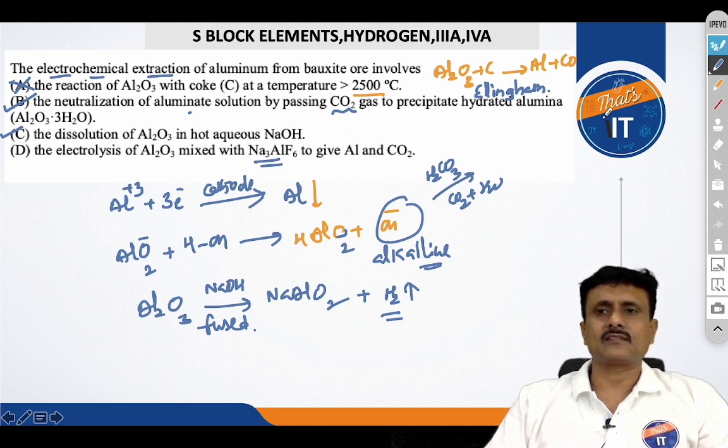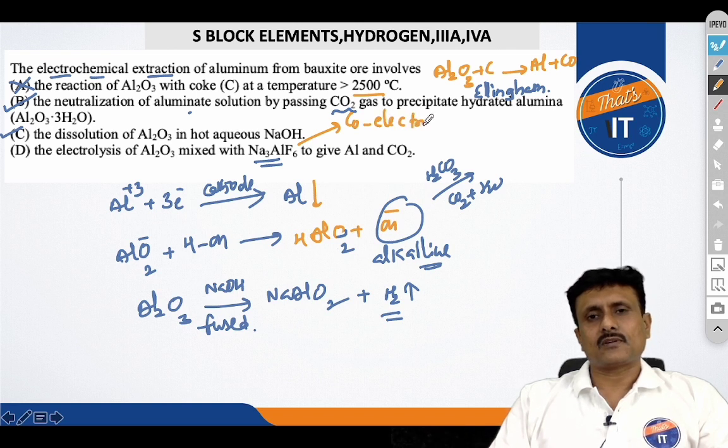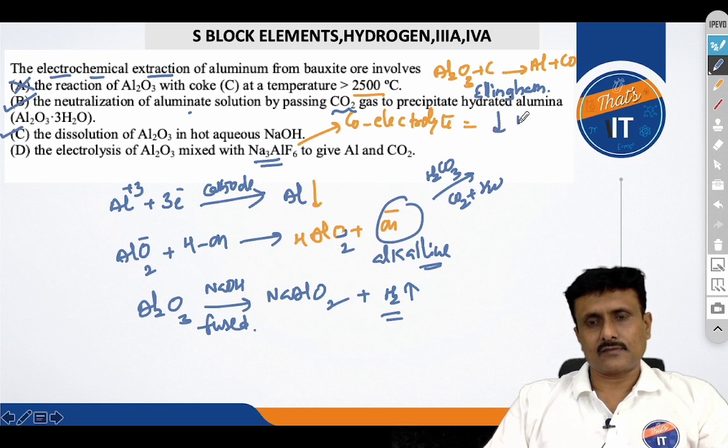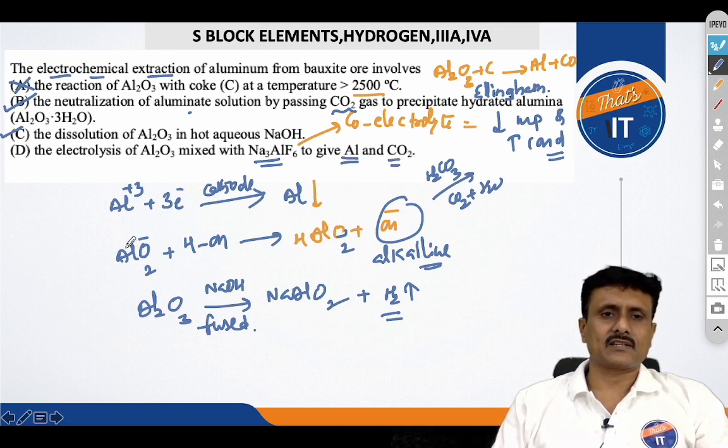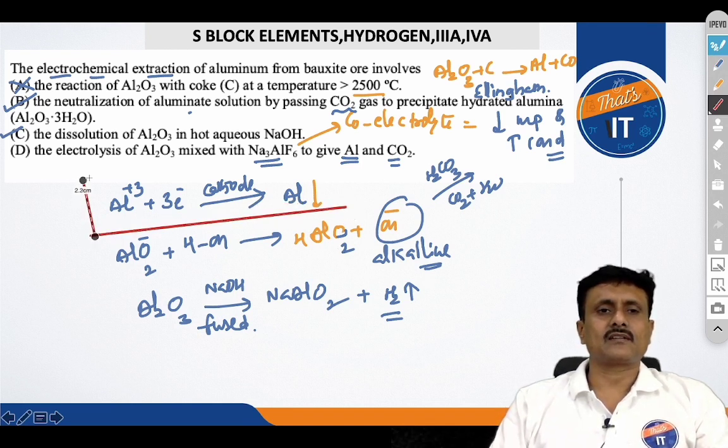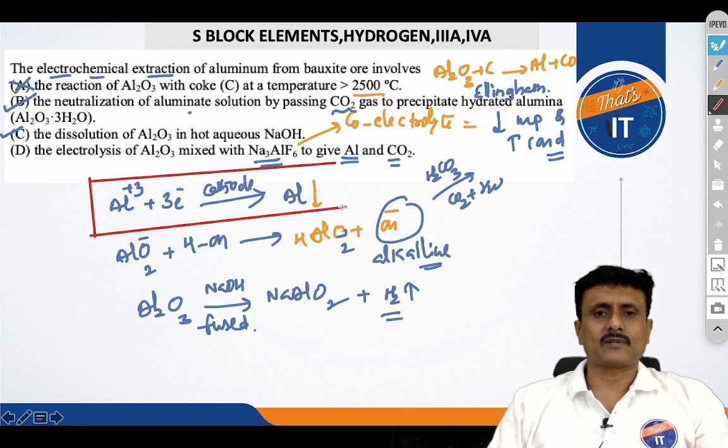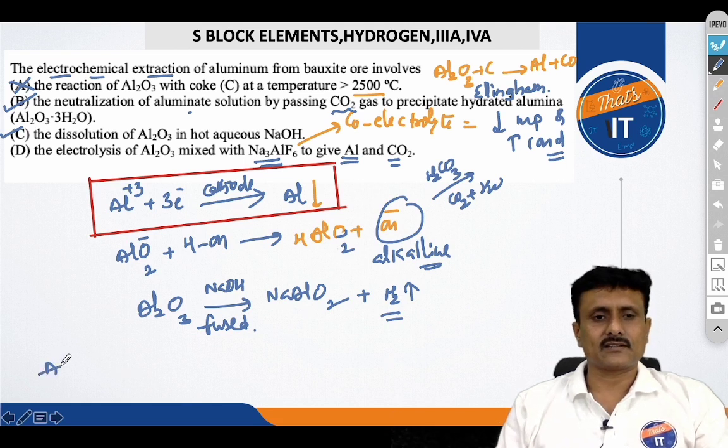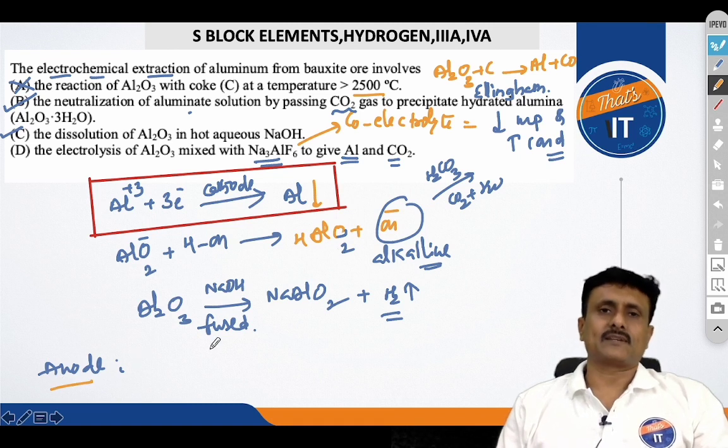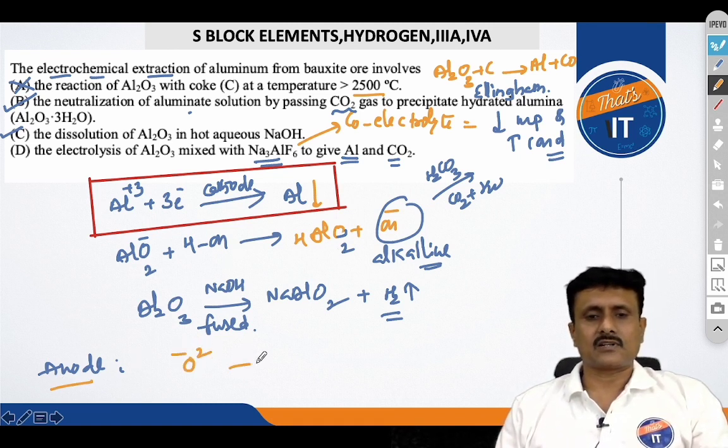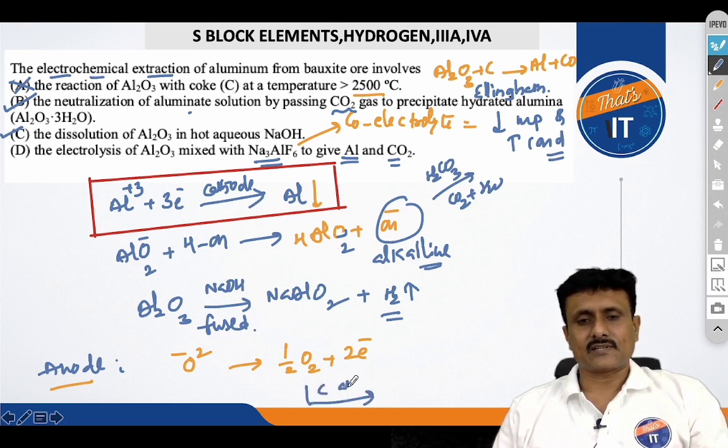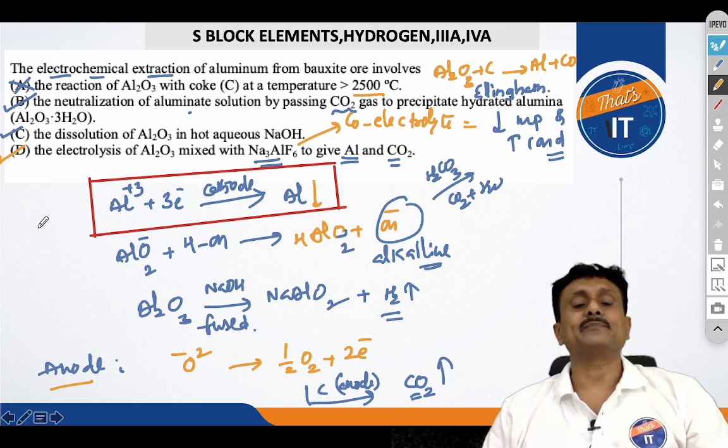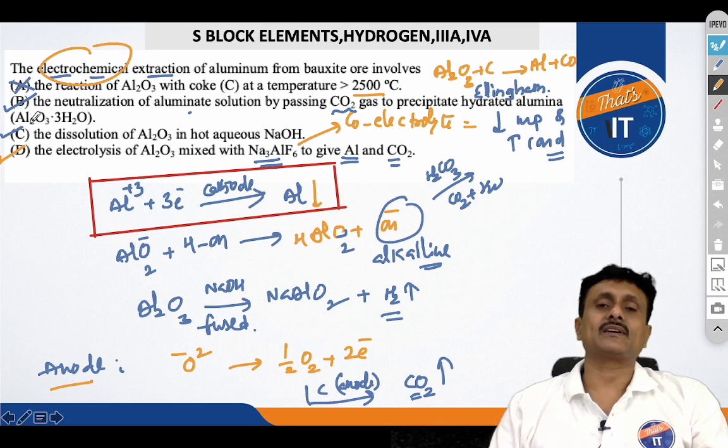The dissolution of Al2O3 in hot aqueous NaOH. So, you have studied sodium meta-aluminate, NaAlO2 plus H2 gas if it is fused. So, that dissolves. The electrolysis of Al2O3 mixed with Na3AlF6, what will happen here that this is the co-electrolyte. So, the purpose of co-electrolyte is to decrease the melting point of the electrolyte and increase the conductance to give aluminum and carbon dioxide. At anode, you should know the reaction that is going to take place. Because, you know that the oxide ion in Al2O3 undergoes the oxidation to give you oxygen gas which will react with the carbon anode to give you the CO2 gas. So, this is also absolutely correct. So, the right answer for this question is B, C and the option A is also correct. But, that is not electrochemical extraction.